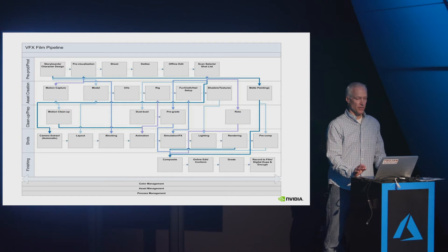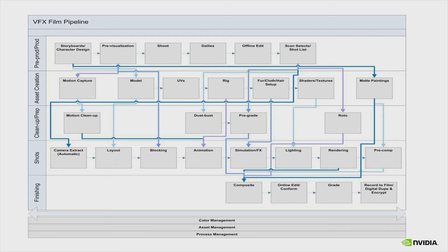This is a VFX pipeline — a more detailed view of visual effects. This is also simplified because it shows a left-to-right flow, but in reality there are multiple iterations with arrows going back to different boxes and recirculating through several iterations. So the rendering pipeline is a very complex distributed environment.